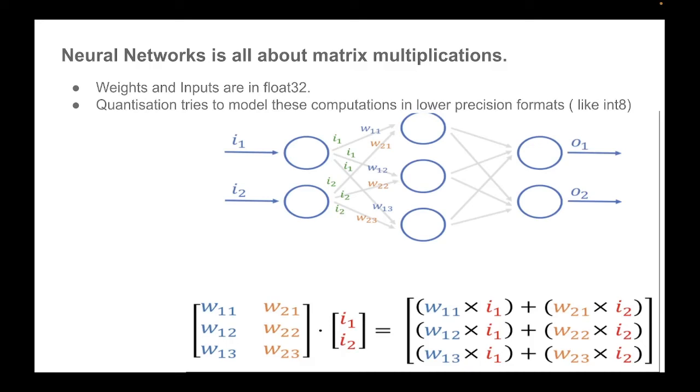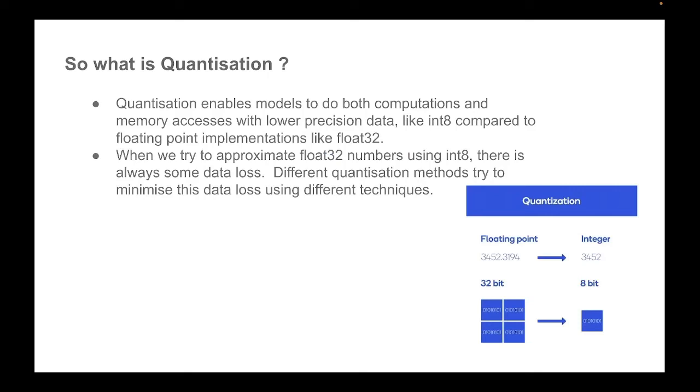So we know this, and when these neural networks are trained, these values are expressed using float 32-bit precision. So the data is stored using 32 bits for each of these values. Quantization tries to model these computations in lower precision formats like int8 for example. So what is quantization? In one line, quantization enables models to do computations and memory accesses with lower precision data like int8 compared to floating point implementations like float 32.